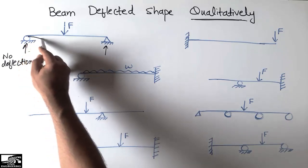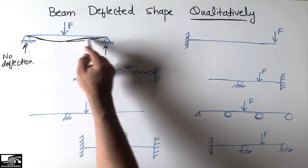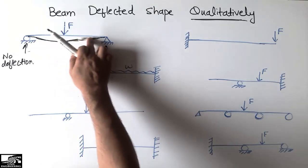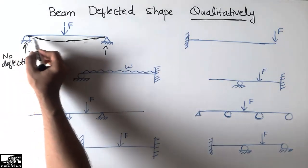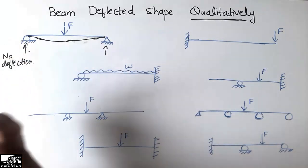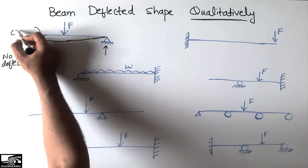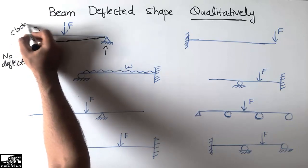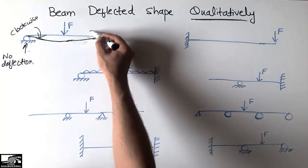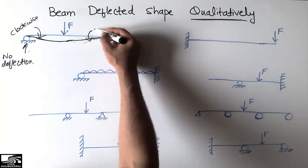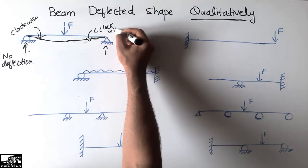So this simply supported beam will deflect in this way. There will be no resistance to rotation, so the left end will rotate in the clockwise direction and this portion of the beam will rotate in the counterclockwise direction. No moment resistance is being provided by the two supports of this beam.